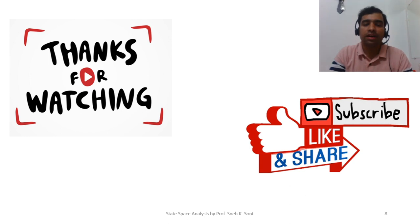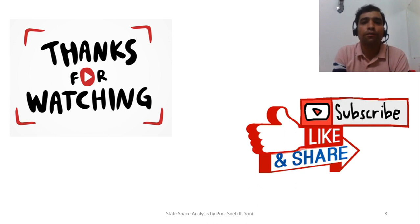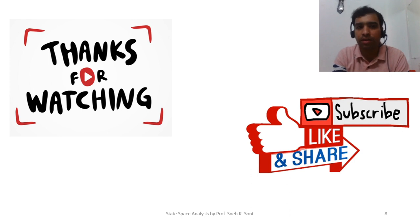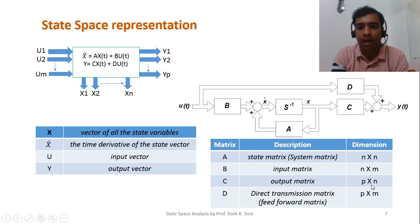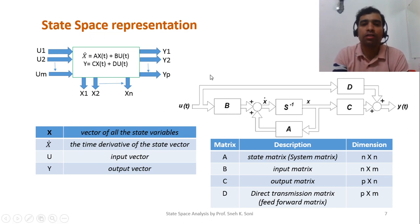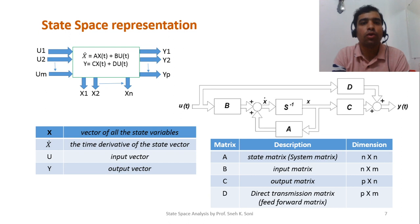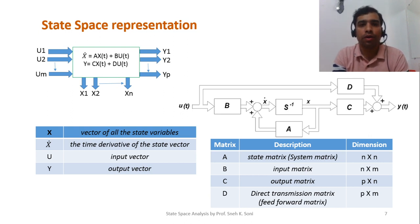Now we will have a quiz. Given a system with three inputs (u1, u2, u3), two outputs (y1, y2), and four state variables (x1, x2, x3, x4), you have to comment with the dimensions of matrices A, B, C, and D based on what we discussed in this session.